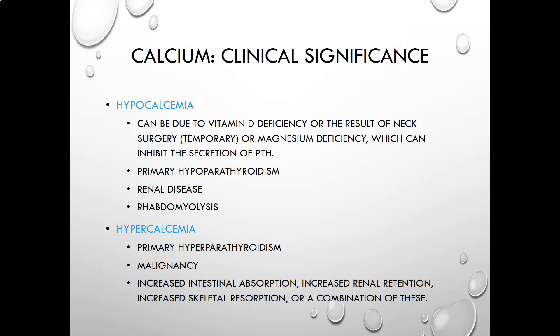Hypercalcemia, or high calcium levels, can be caused by primary hyperparathyroidism — too much parathyroid hormone. Malignancies from certain cancers can also cause it, and if it is cancer-related, the parathyroid hormone levels are typically normal to low. Hypercalcemia can also be seen with increased intestinal absorption, increased renal retention, increased skeletal resorption, or a combination of all three.